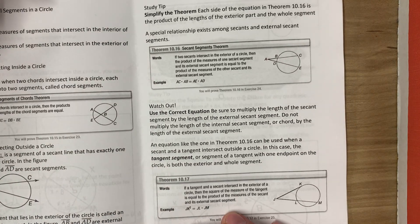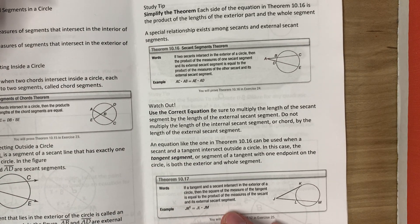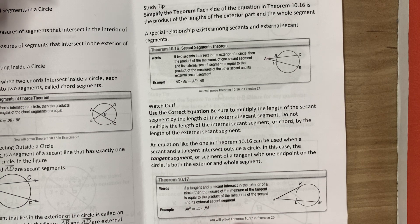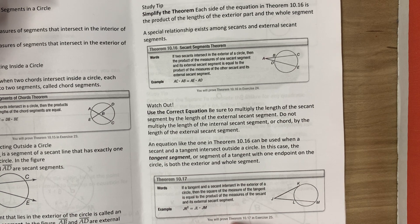Be sure to multiply the length of the secant segment by the length of the external secant segment. Do not multiply the length of the internal secant segment, or chord, by the length of the external secant segment.